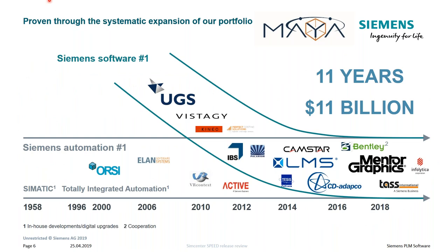Siemens has been acquiring quite a lot of companies. Over the last 11 years, they've acquired over $11 billion worth of companies. The companies to note are LMS — which includes AMSIM, test, and simulation — CD-Adapco, which is where the Speed acquisition comes in, but there's also StarCCM Plus and HEATS. There's the whole Mentor Graphics lineup, and recently Infolitica, where Magnet is at. All of these softwares are going to start being integrated and talking together, showing really good capabilities in co-simulation, which Marcus is going to demonstrate today.